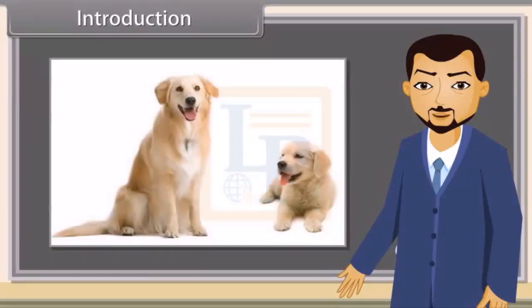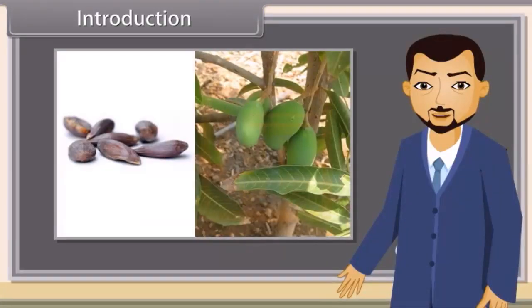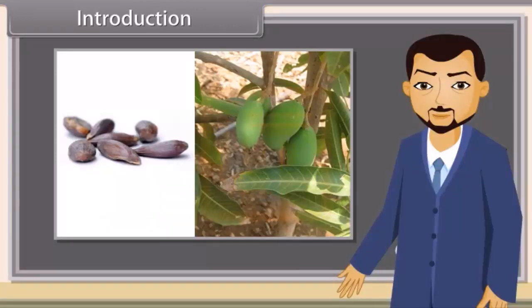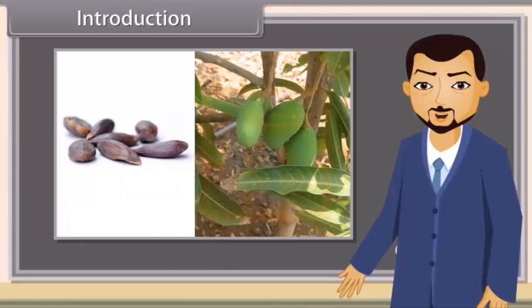Introduction. What can you see in this picture? We can see a dog and its puppy. Correct. Can the seeds in this picture produce the corresponding mango plant? No, mango plant can only be produced from mango tree. You're right. Who looks similar to your father, you or your cousin? I will look more similar to my father. Do you know what the reason behind this similarity is? No. This phenomenon of production of similar offspring depends on the inheritance of various genes.